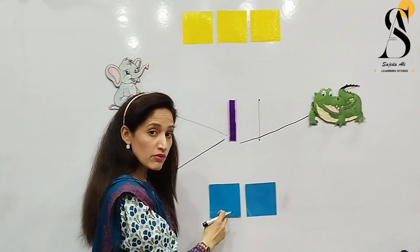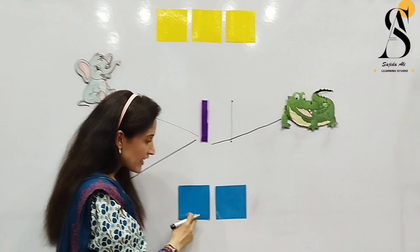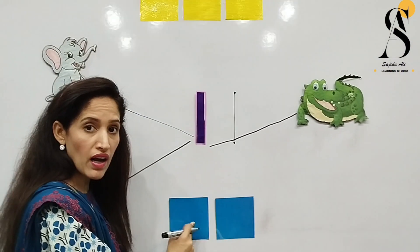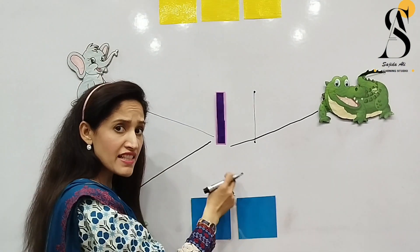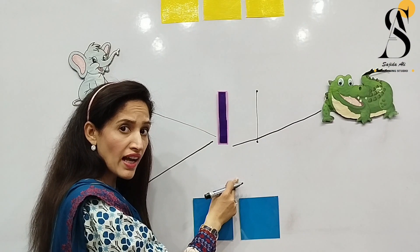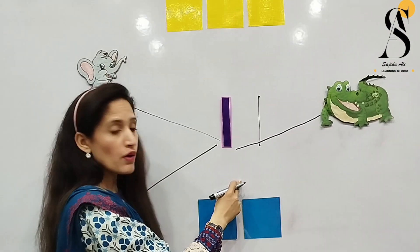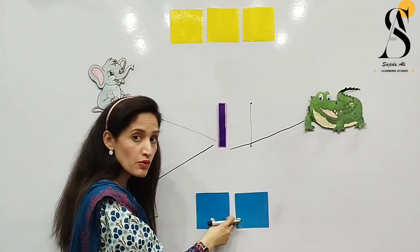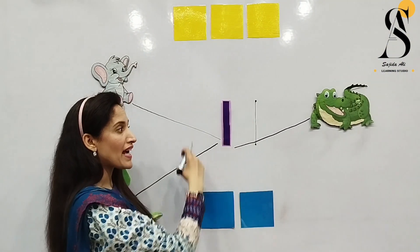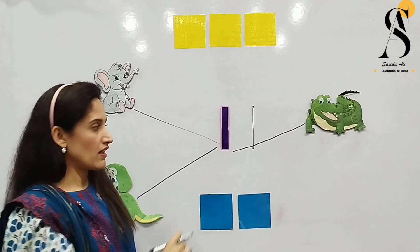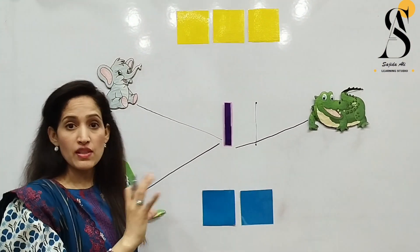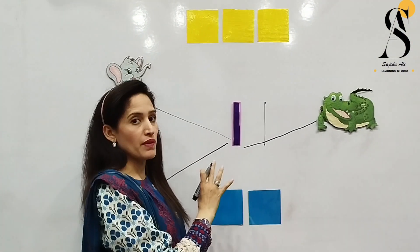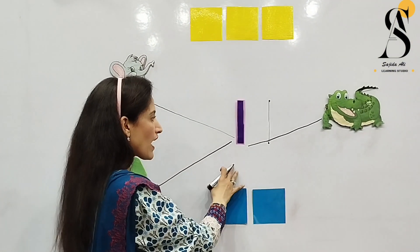Let's count the shapes again here. How many shapes are here? One, two. Can we match it with number one? No, because they are two. We have to match only the thing which is one in number — we can match it with number one.